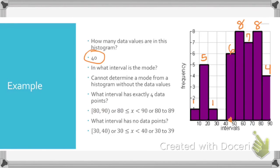And then it says, what interval has exactly four data points? Well, that's easy, this one right here, because this is the one that has a frequency of four, so it would be from 80 to 90.